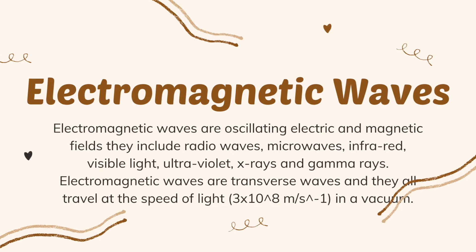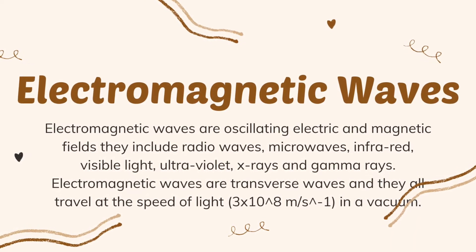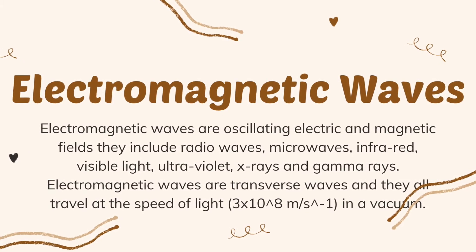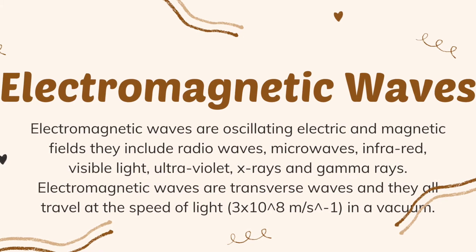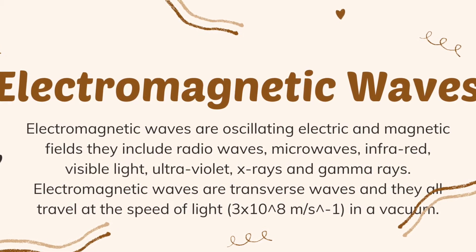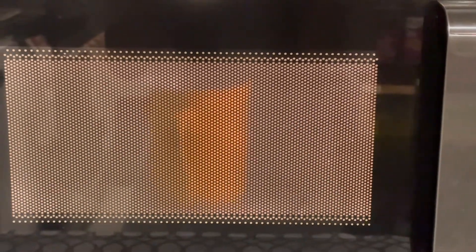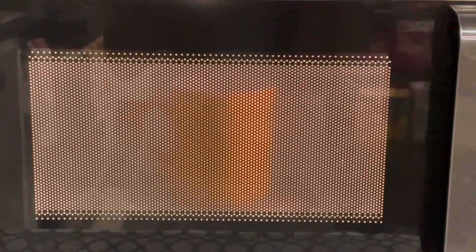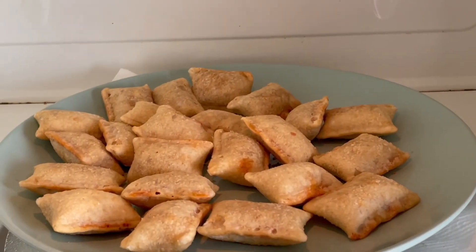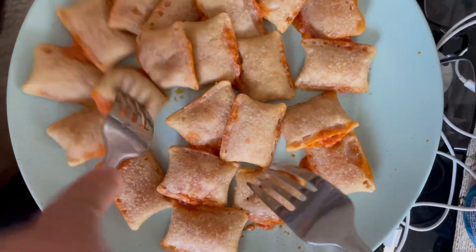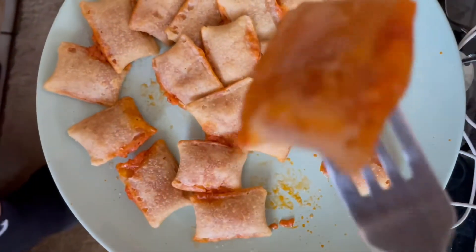Electromagnetic waves are escalating electric and magnetic fields. They include radio waves, microwaves, infrared, visible light, ultraviolet, x-rays, and gamma rays. Electromagnetic waves are transverse waves and they all travel at the speed of light in a vacuum. When we microwave a cup of milk or leftovers from last night's dinner, the waves from the microwave are basically in between radio waves and infrared radiation. So when we put something in the microwave, the radiation heats our food, making it warm.